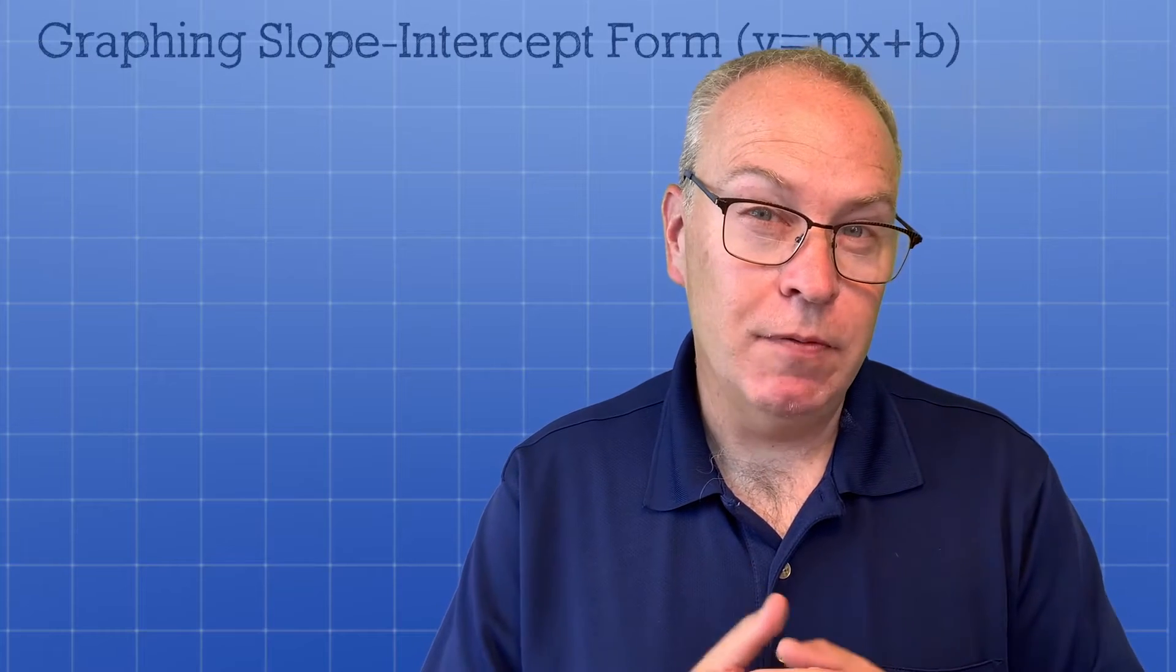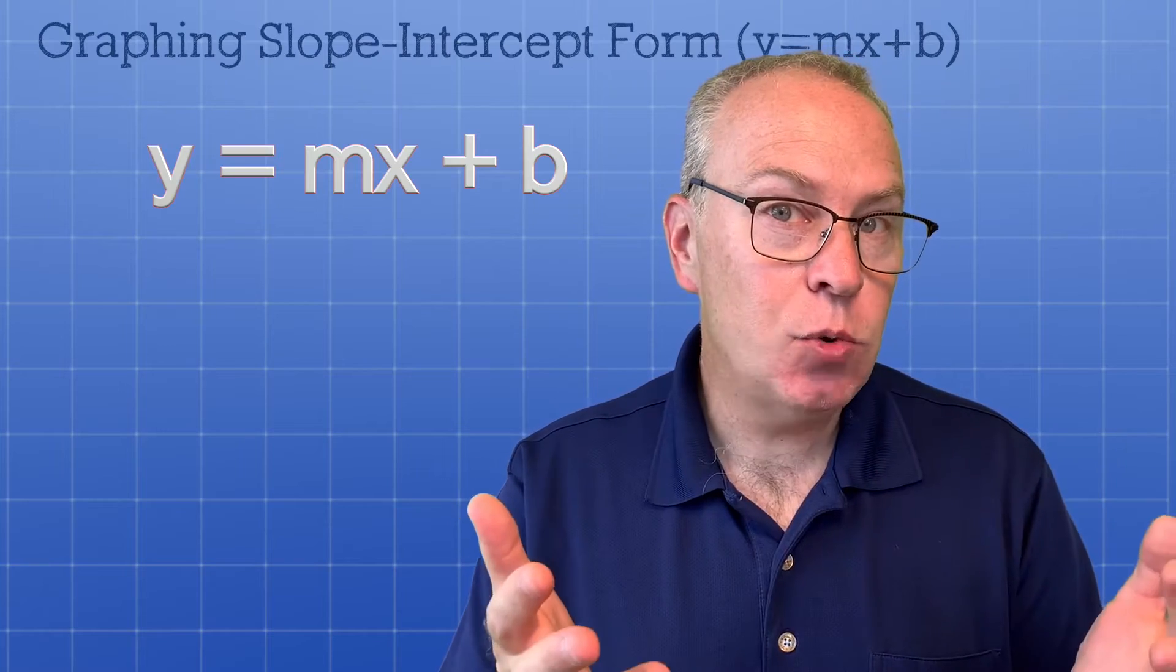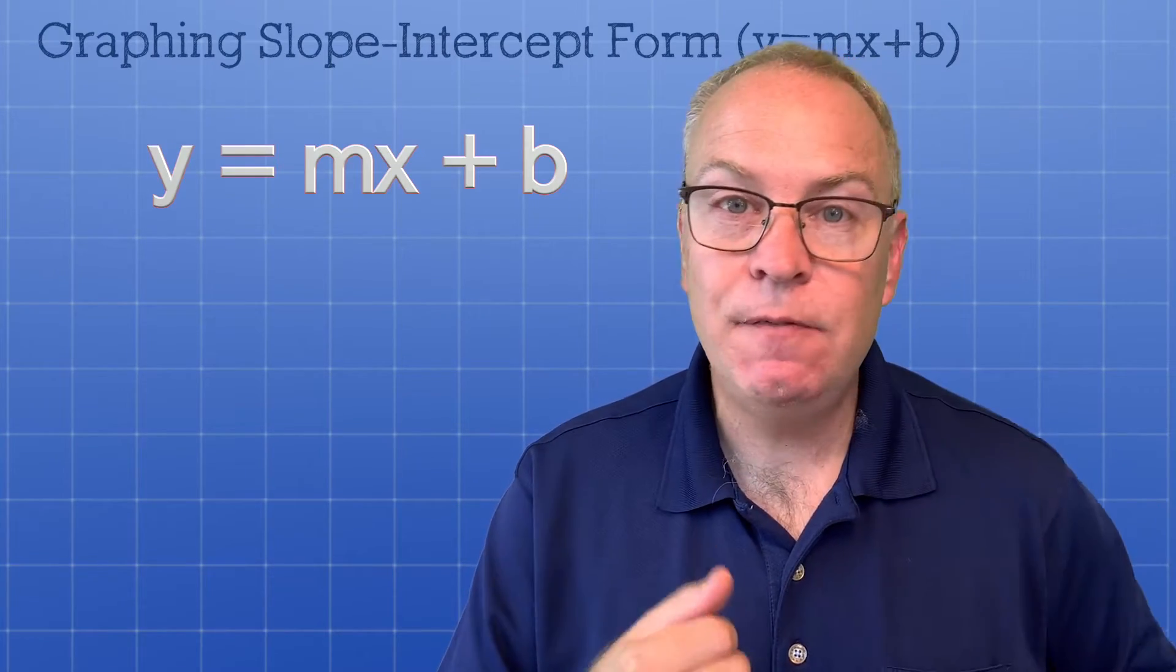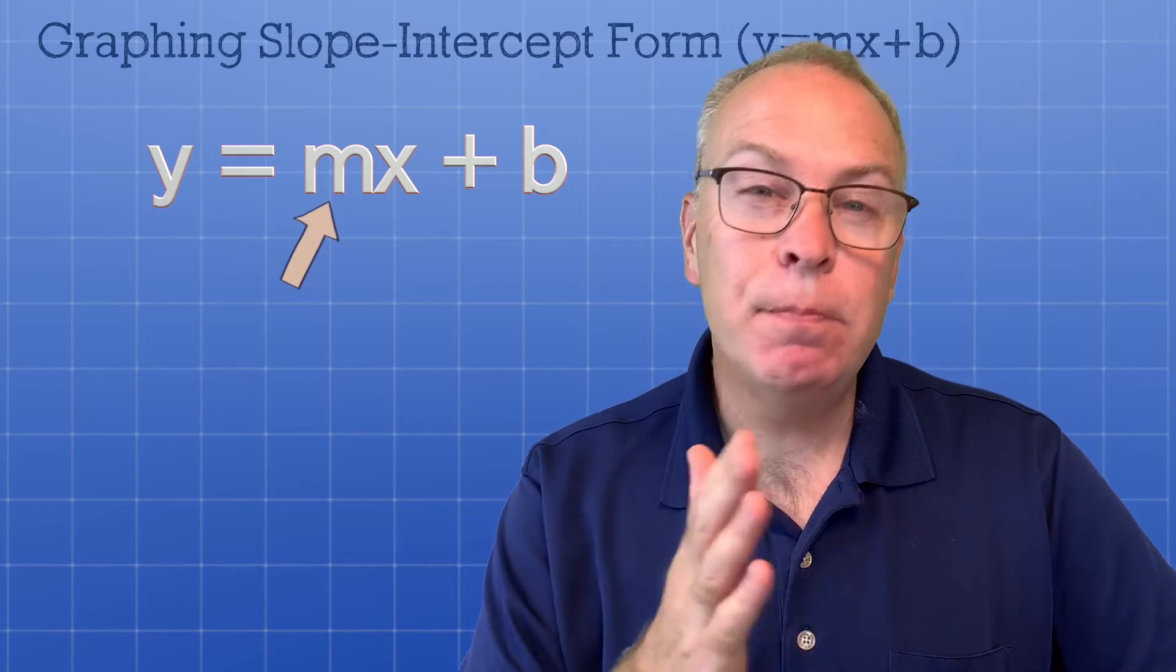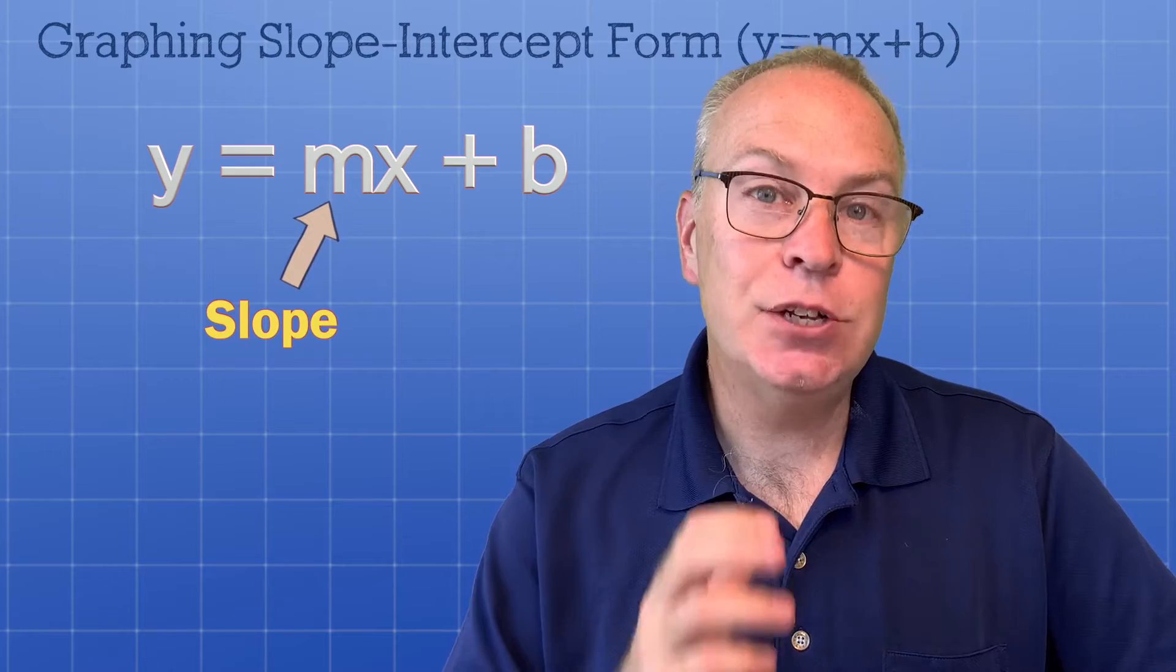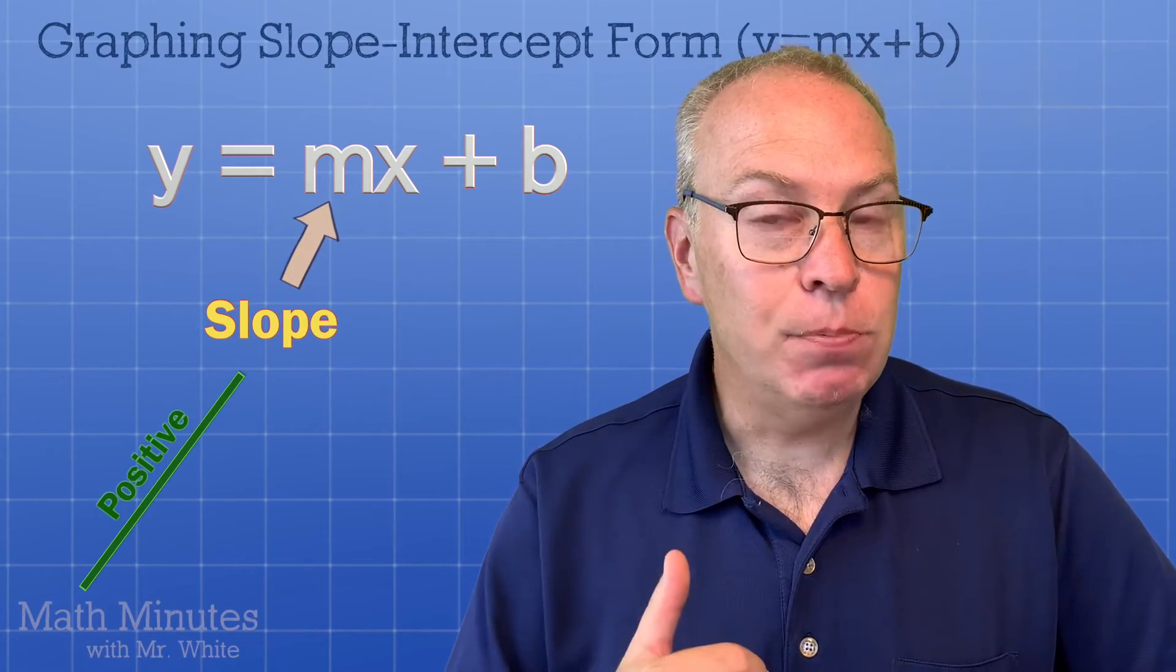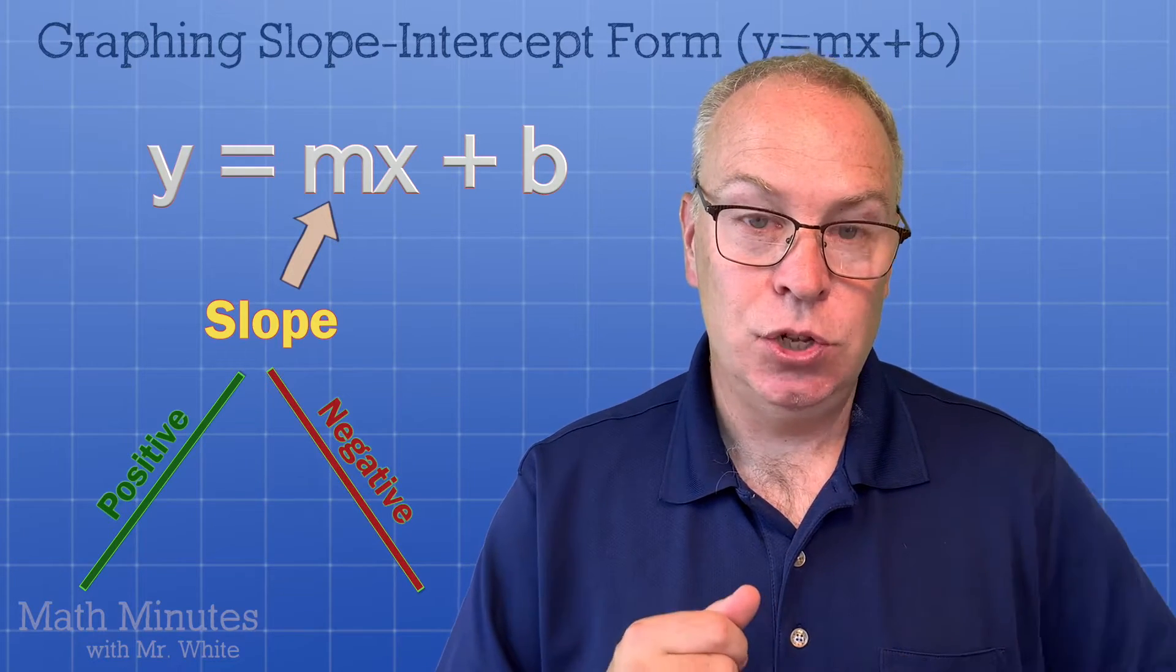Slope-intercept form of a linear equation: y equals mx plus b. When you have a linear equation in that form, it's really easy to figure out the slope and the y-intercept because m, that number in front, the coefficient on x, that's your slope. That's your rise and your run. Remember, positive slope lines are up and to the right. Negative slope lines are down and to the right.